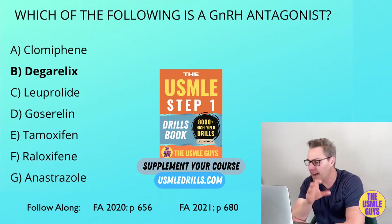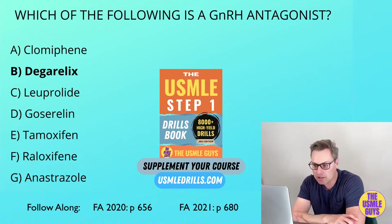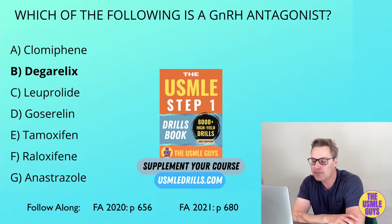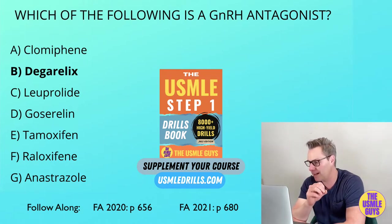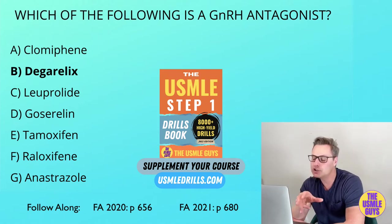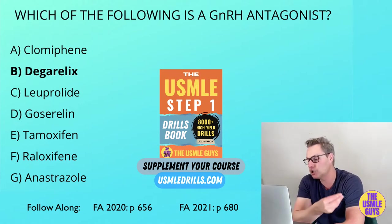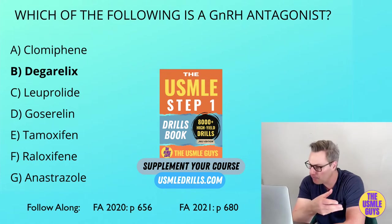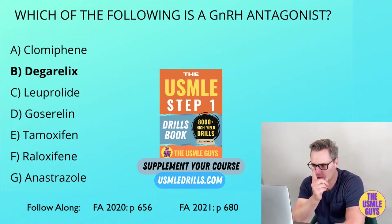Goserelin and leuprolide are GnRH analogs. These work as GnRH agonists if they're used in a pulsatile fashion. If we use them continuously, we achieve the opposite goal and experience GnRH antagonism, which then drops the release of FSH and LH. Make sure you remember pulsatile versus continuous.